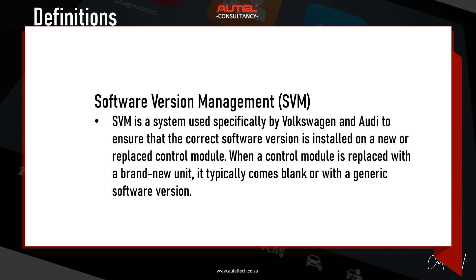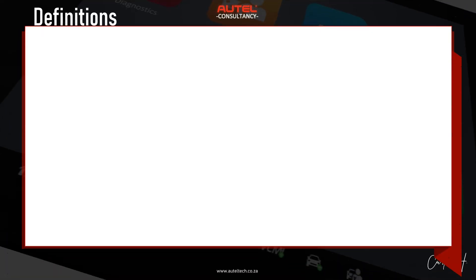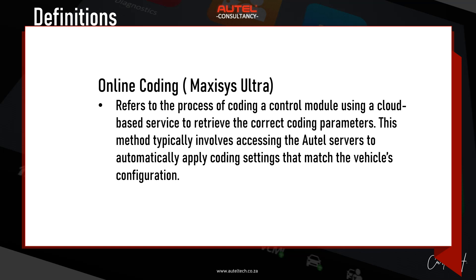Next is online coding with the MaxiSys Ultra. Online coding refers to the process of coding a control unit using a cloud-based service to retrieve the correct coding parameters. This method involves accessing the Autel servers to automatically apply coding settings that match the vehicle's configuration. Online coding is useful when configuring existing modules or when a module has been reset or replaced with a used one — it's a streamlined process of applying the correct coding without needing to manually input the data. The key difference is: online coding adjusts settings within the module, while SVM programming installs the operating software into the module.